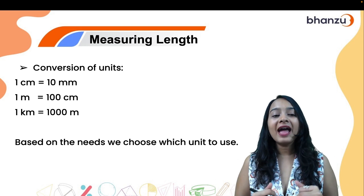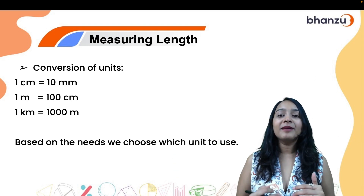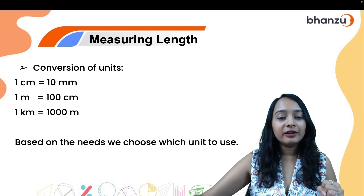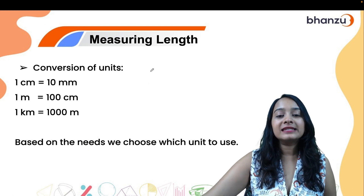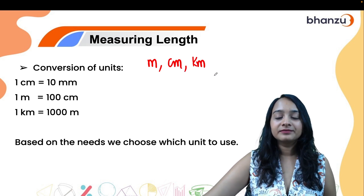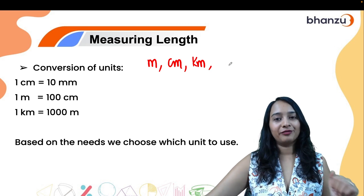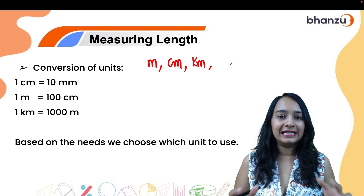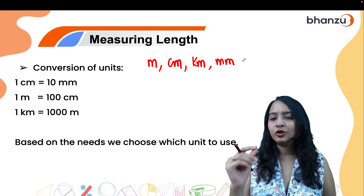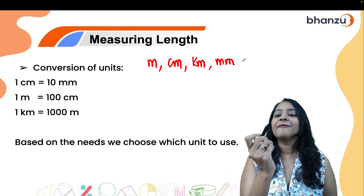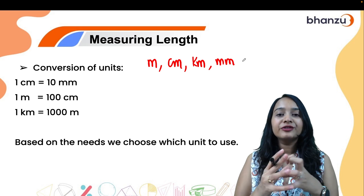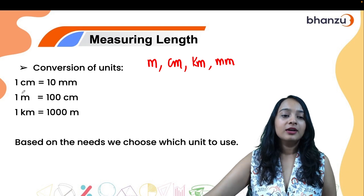For measuring length — like the length of a pencil, the table, or your own height — we use units like meter, centimeter, kilometer, and millimeter. Millimeter is used when you want to measure the tiniest length possible, like the tip of a pen. All these units of measurement are related to each other.